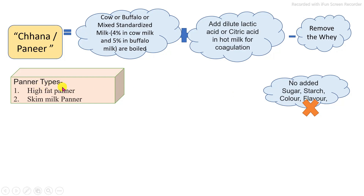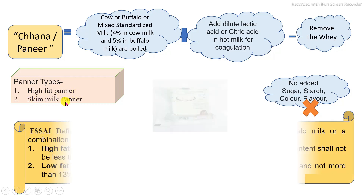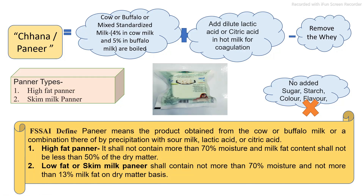As per the initial raw material, paneers are of two types: high fat content paneer and skim milk paneer. As per the food safety standard of India, the minimum fat and moisture requirements in high fat content paneer are not more than 70% moisture and milk fat content shall not be less than 50% on dry matter. In low fat or skim milk paneer, not more than 70% moisture and not more than 13% milk fat on a dry basis of the final product.